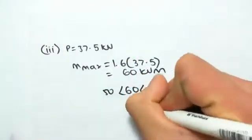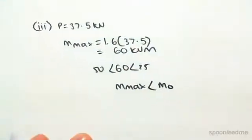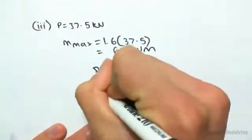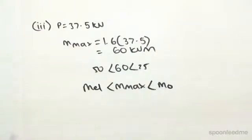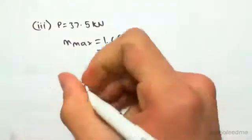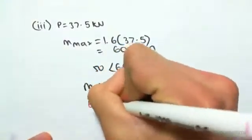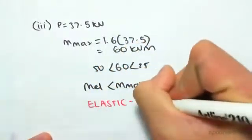In other words, our maximum moment is between the plastic limit and the elastic limit. So what this means is that our beam is going to be experiencing elastic-plastic. So part of our beam is elastic and part of our beam will be plastic.